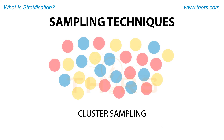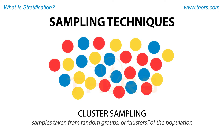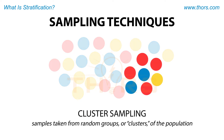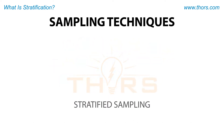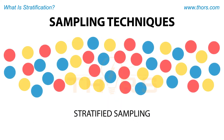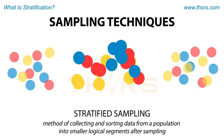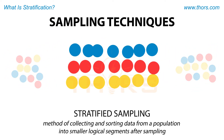Cluster sampling involves samples being taken from random groups, or clusters, of the population. And finally, stratified sampling is the method of collecting and sorting data from a population into smaller, logical segments after sampling takes place.